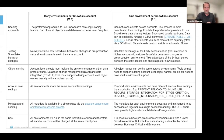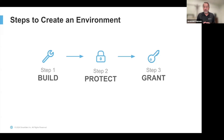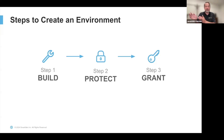I want to talk about how to create an environment and some best practices. If I boil it down to three steps: first, build the environment; second, protect it; third, grant access. The protection step is where you work with your InfoSec team to understand requirements — specifically, what production data can exist in a pre-production environment. I've seen both extremes: some customers can have all production data in pre-prod, while others can have no production data at all and it must all be synthetically generated.